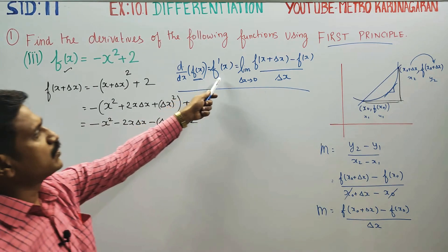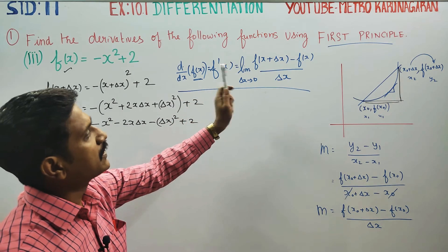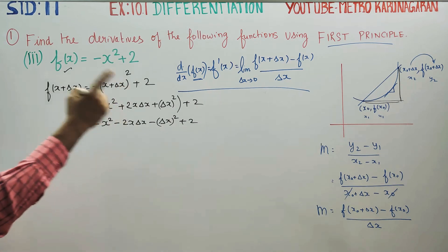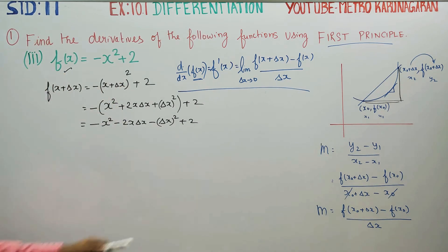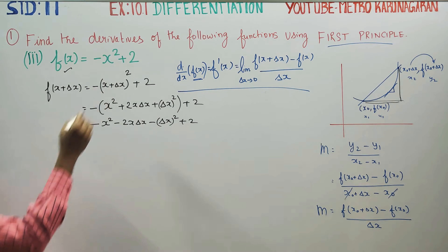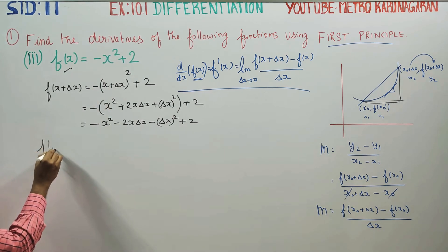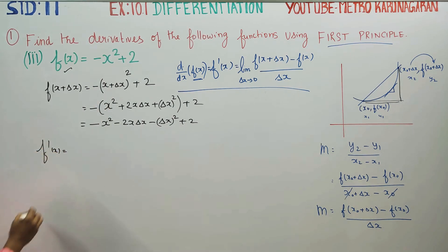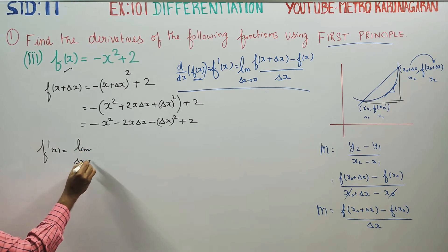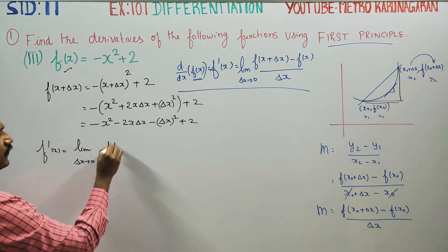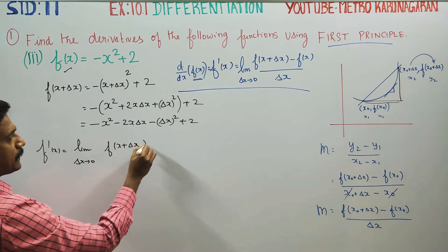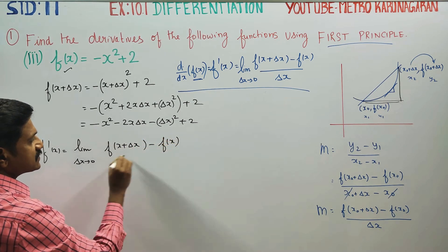Now coming back to our first principle formula: f'(x) = limit as delta x tends to 0 of [f(x + delta x) - f(x)] / delta x.